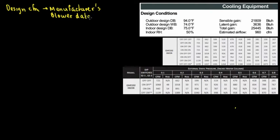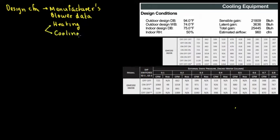If you want to obtain the data from the manufacturer, you need the model number of your furnace. After doing a Manual J and Manual S, you can go to the next step. We are prepping for Manual D, which is duct design. The manufacturer's blower data gives you two sets: heating data and cooling data.